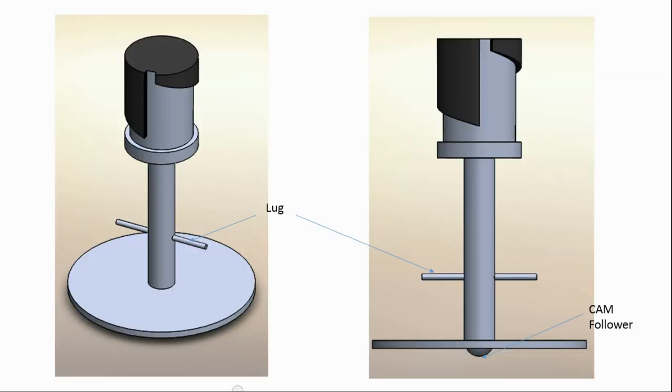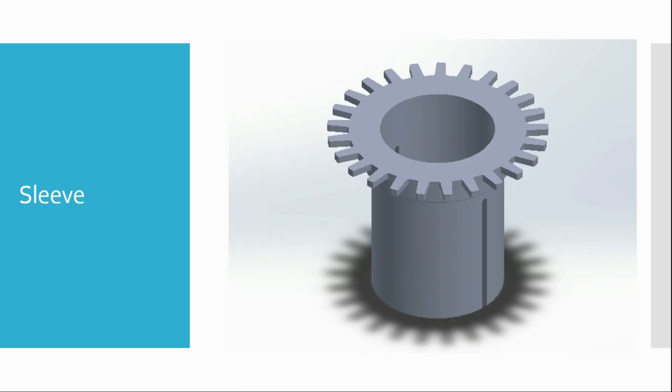The lower part of the piston has a lug, a cam follower and a disc. This is a sleeve that fits outside the cylinder. It has a tooth part. We'll see why soon.